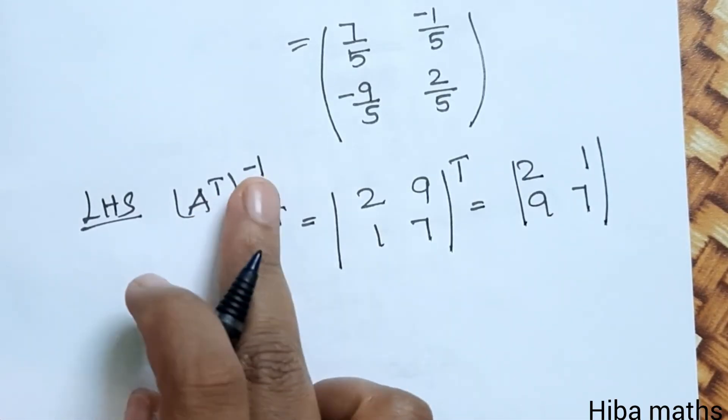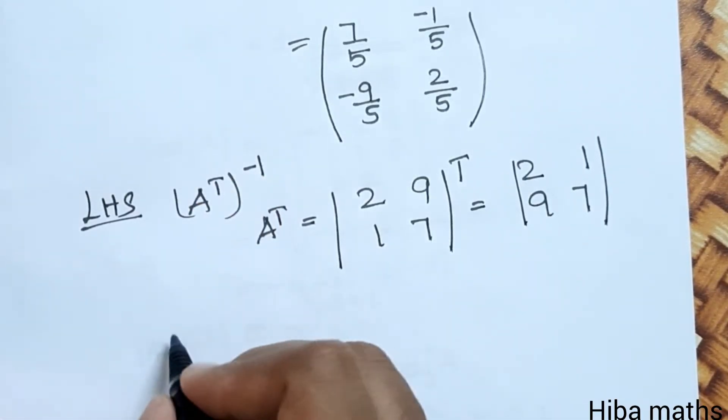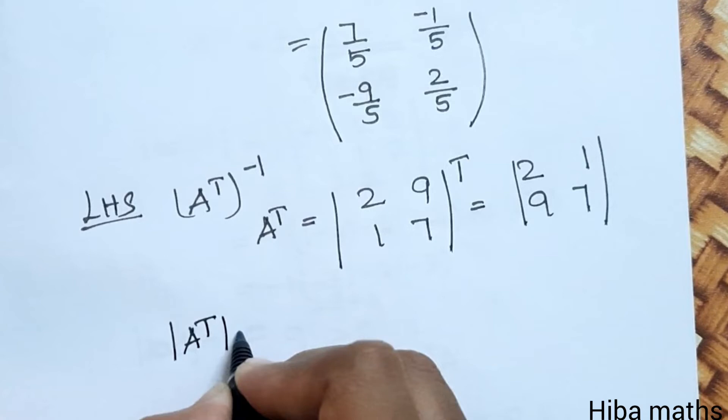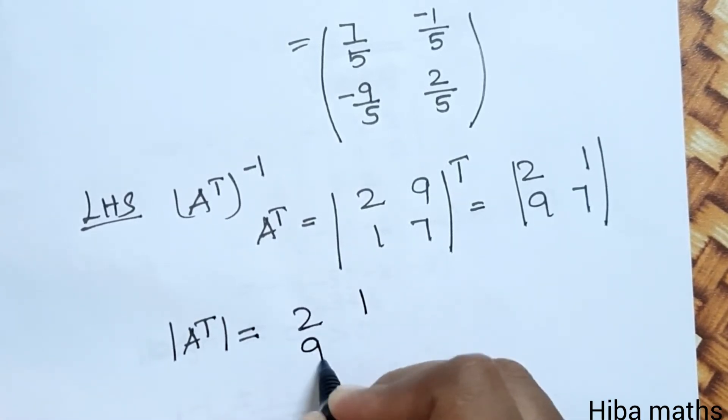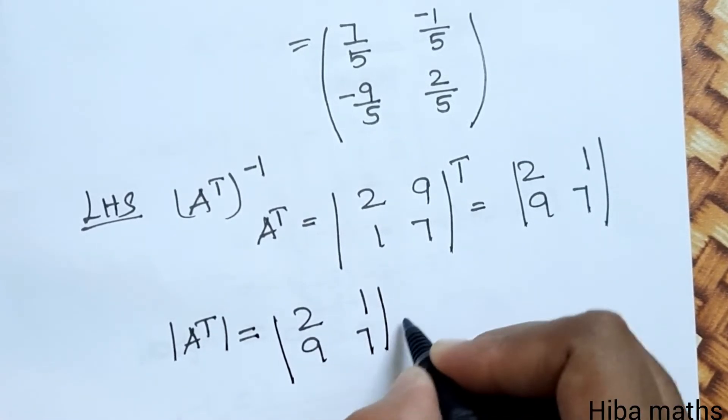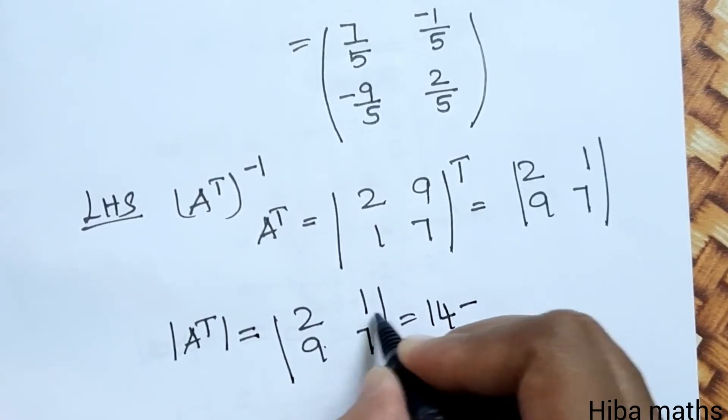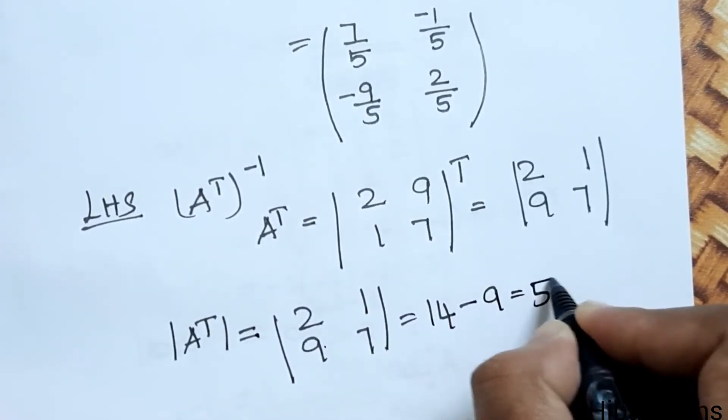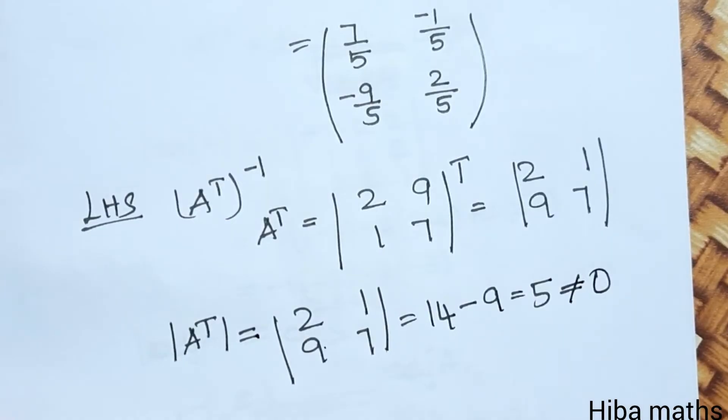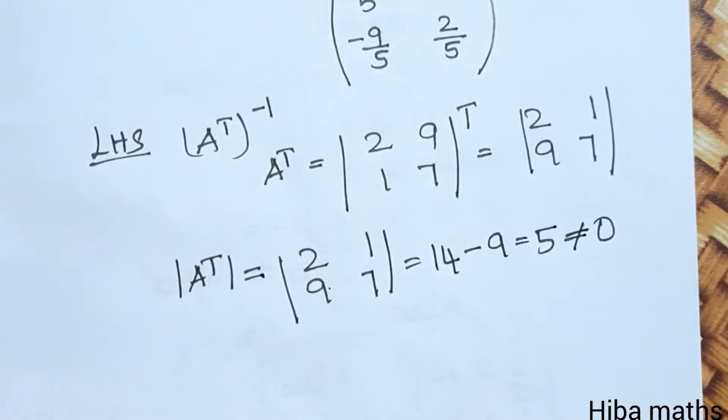A transpose inverse. So A transpose determinant: 2, 1, 9, 7. So 7, 2's are 14, minus 9, 1's are 9, which is equal to 5. That is not equal to 0. So A transpose inverse exists.